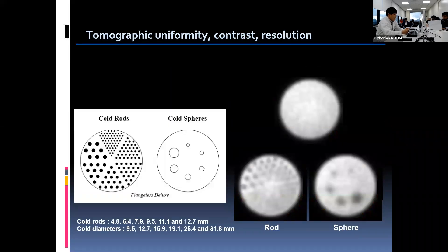Let's look at what the phantom consists of. The phantom contains three different segments. There are non-radioactive rods of different sizes in the bottom of the phantom for measuring spatial resolution. There are cold spheres of different sizes in the middle that are used for measuring contrast. And on the top of the phantom, there is a homogeneous radioactivity segment for evaluating uniformity. The images on the right show the reconstructed transaxial images for each segment.